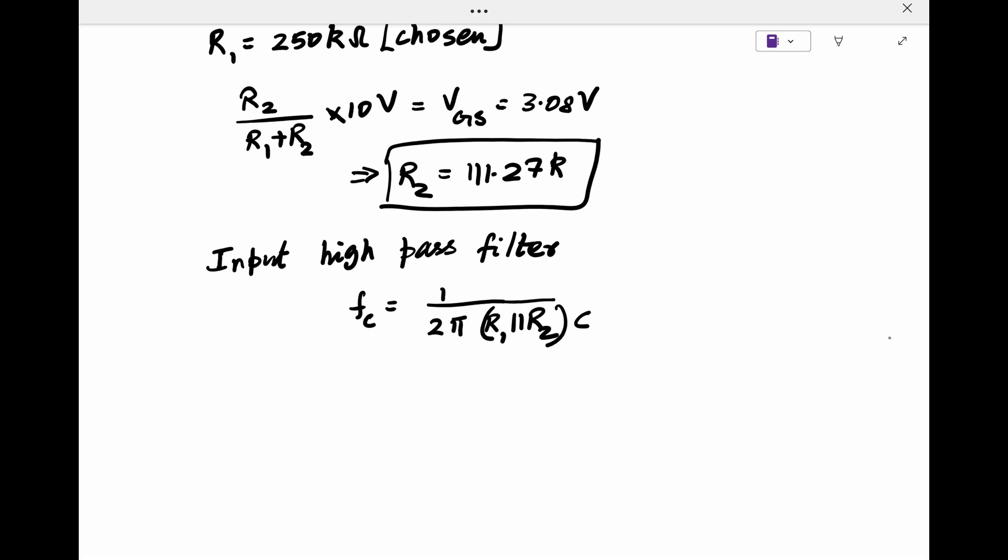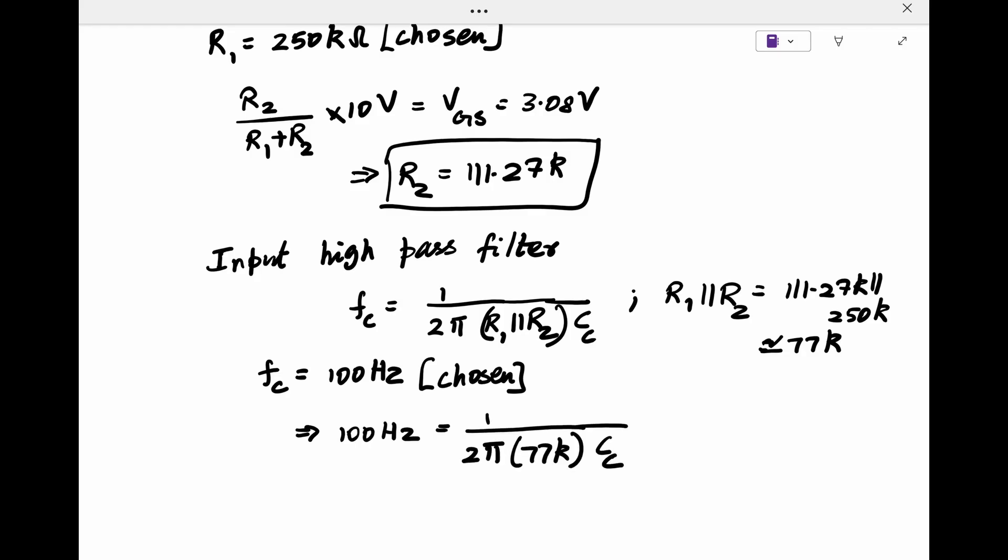The input and output coupling capacitors are designed such that we only amplify the frequencies of interest. If we choose the cutoff frequency as 100 Hz for the high-pass filter, we can calculate the coupling capacitor needs to be around 20 nF.